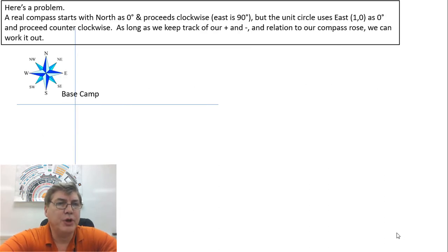Now we have a little bit of a problem if you're familiar with directions. A real compass starts with north being zero degrees and proceeds clockwise so that east is 90 degrees. But a unit circle generally starts with east being zero degrees, at the position x equals 1 and y equals 0, and proceeds counterclockwise. As long as we keep track of our positive and negatives for our x and y components in relation to those compass directions, we can work it out.